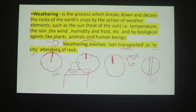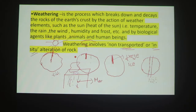The second process is transport — it is a downward movement. Downward movement due to gravity is mass wasting. This is mass wasting.